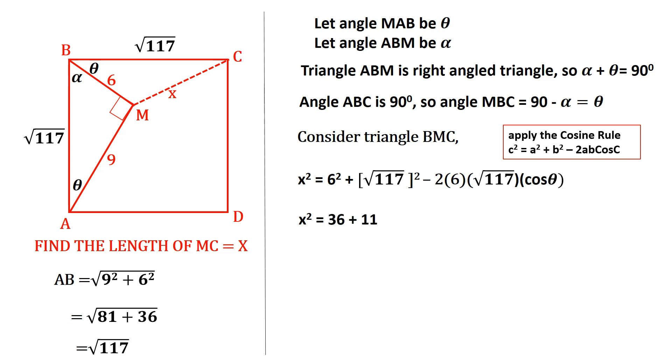6 squared is 36, the square root of 117 squared is 117, and 2 times 6 is 12 times the square root of 117.